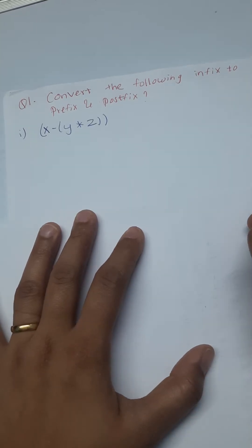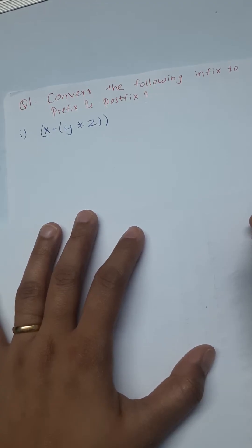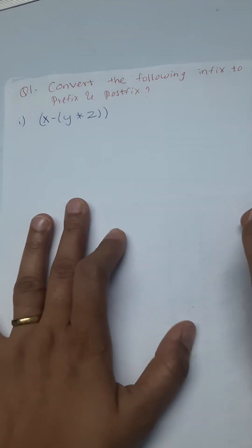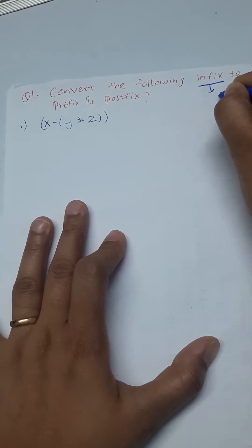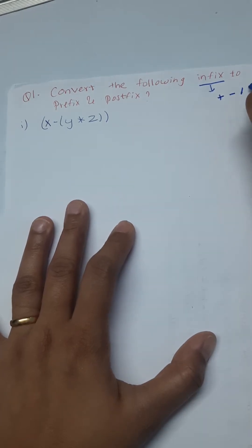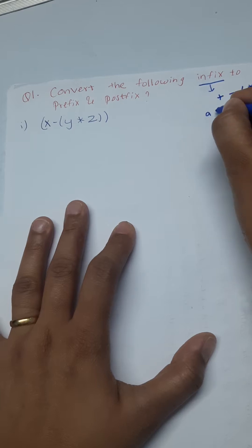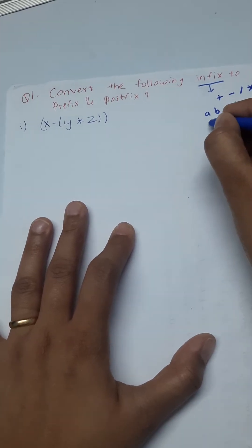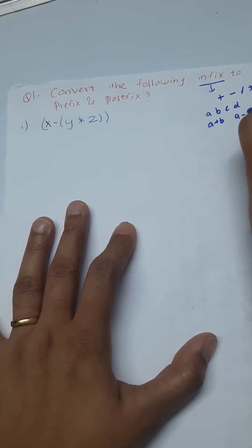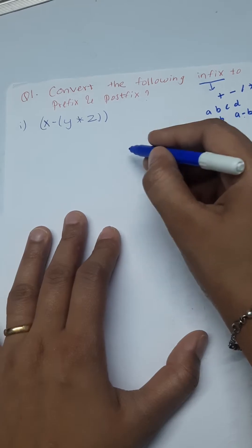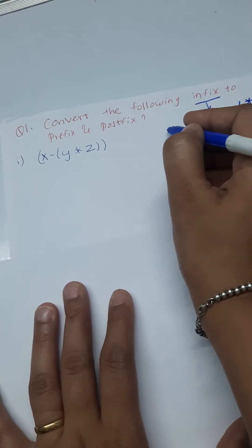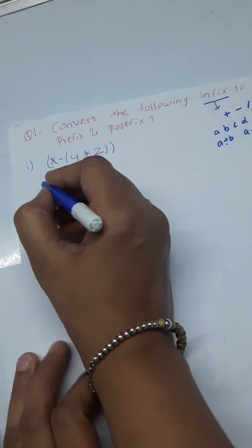Hello everyone. In today's class we are going to solve a few problems from unit one. Question number one is: convert the following infix to prefix and postfix. In infix notation, operators are written between the operands — for example, A plus B or A minus B. For prefix, the operator comes first, and for postfix, the operator comes after the operands.